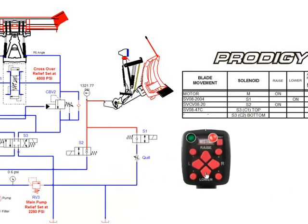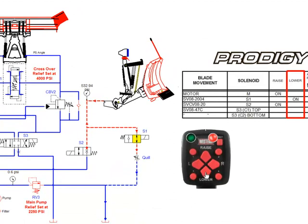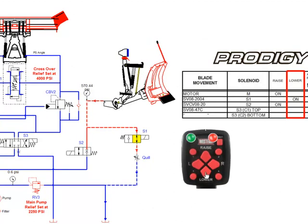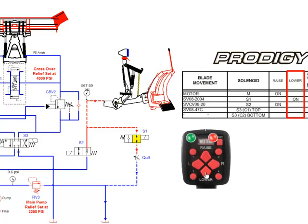Pressing the lower function will engage the S1 coil. S1 valve will shift allowing fluid to flow out of the lift ram, through S1, through the adjustable quill, and back to tank.